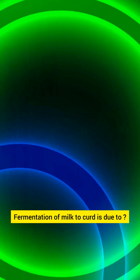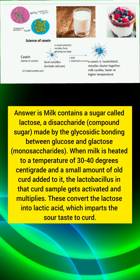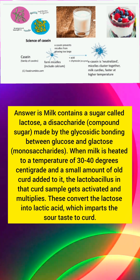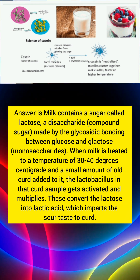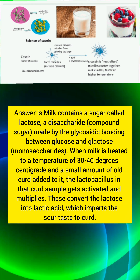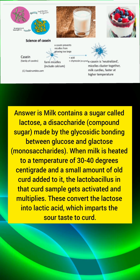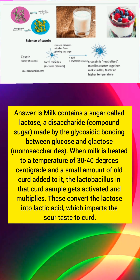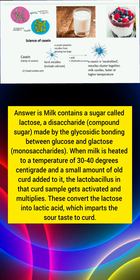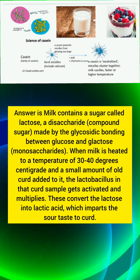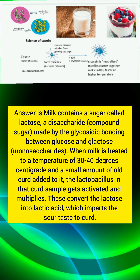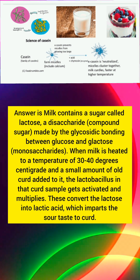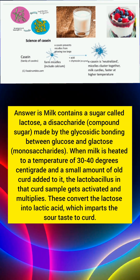Fermentation of milk to curd is due to? Answer: Milk contains a sugar called lactose, a disaccharide — a compound sugar made by the glycosidic bonding between glucose and galactose monosaccharides. When milk is heated to a temperature of 30 to 40 degrees centigrade and a small amount of old curd is added to it, the lactobacillus in that curd sample gets activated and multiplies. These convert the lactose into lactic acid, which imparts the sour taste to curd.